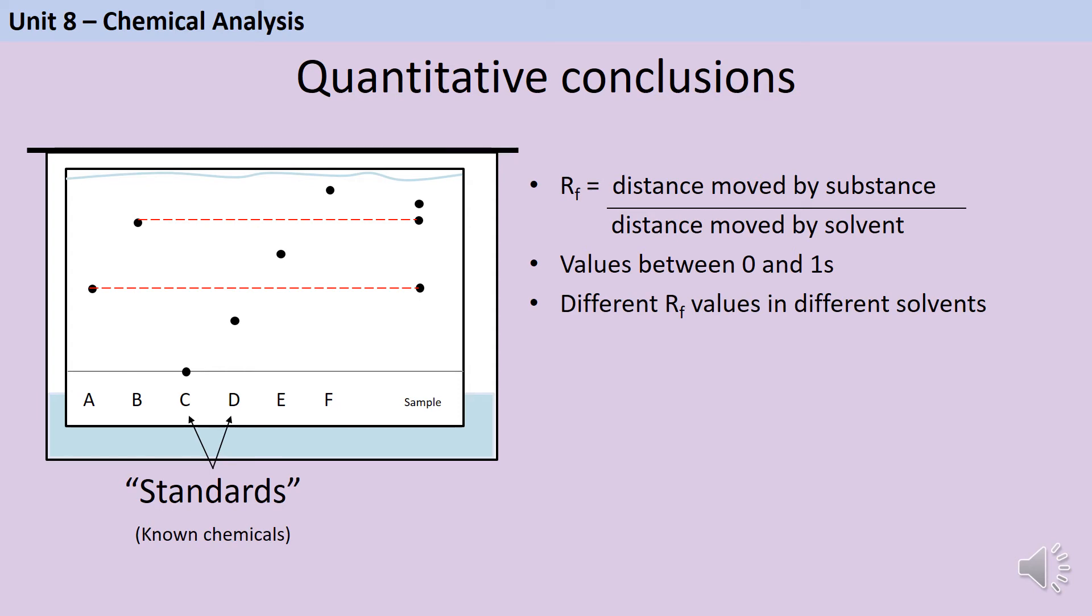But when we're thinking about industrial chemical analysis and maybe trying to analyze a sample for hundreds or even thousands of different compounds, it just wouldn't be realistic to put every single one of those samples on the same chromatogram as the sample that we're trying to test. It would need to be huge and also we would need huge amounts of those samples to include them every time we try to analyze something.